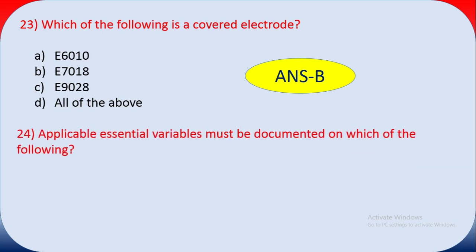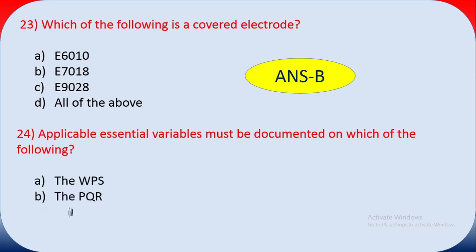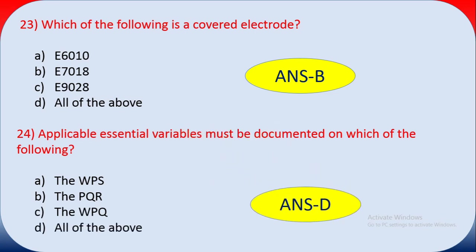Question twenty-three: which of the following is a covered electrode? E7018 is definitely a covered electrode — you can blindly say the answer is B. Question twenty-four: applicable essential variables must be documented in which of the following? Options include the WPS, the PQR, the WPQ, and all of the above. The answer is D — all of the above.